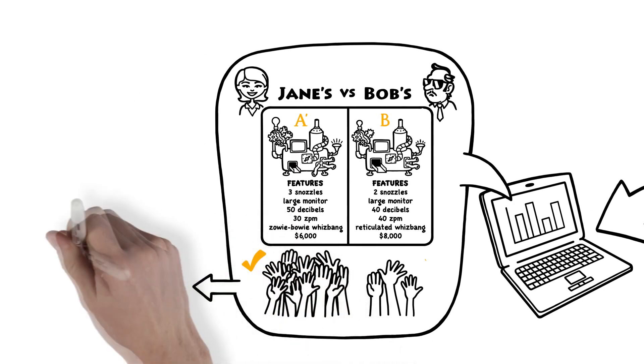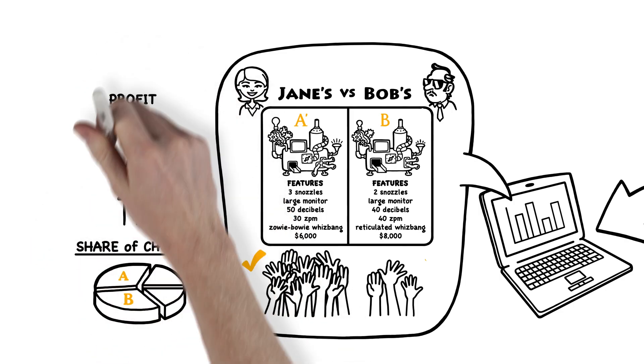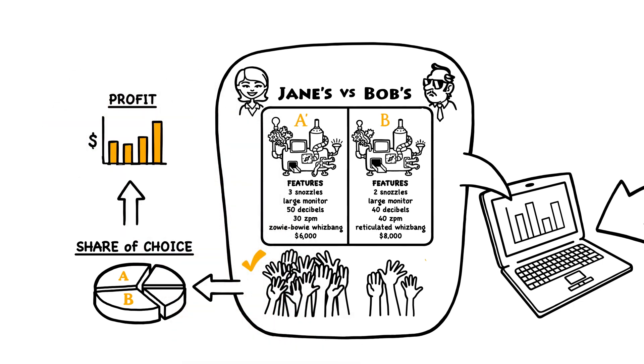Better yet, if Jane knew something about the cost of manufacturing the features, the software could search all potential bazoogles to find the one that's likely to beat the competition and maximize profit.